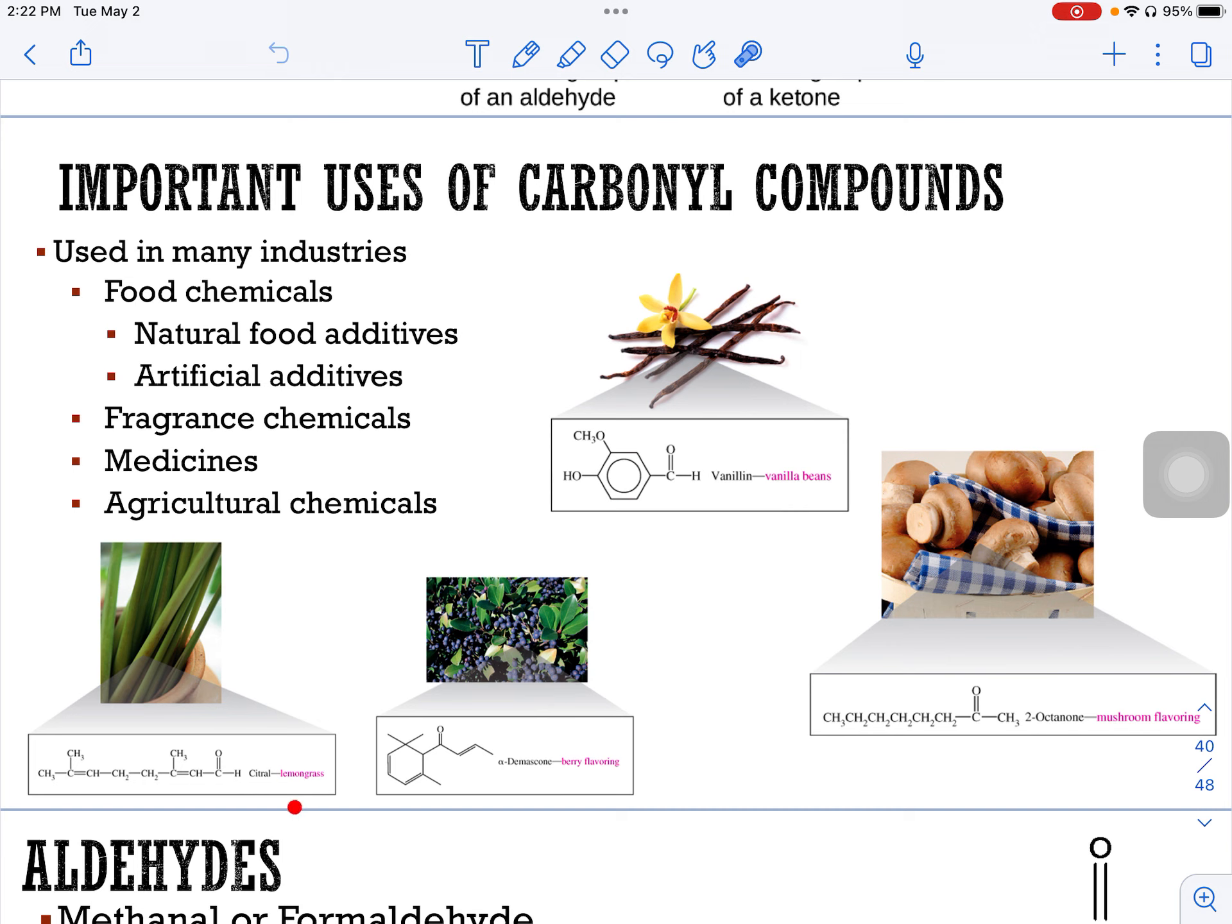Here's some examples. Here's lemongrass. Here's vanillin, which is the scent from the vanilla beans, octanone, which is mushroom flavoring, and there's berry flavoring. And in each and every one of these, you can see the different carbonyl groups.